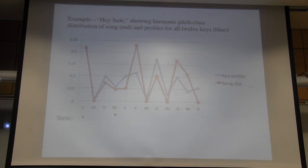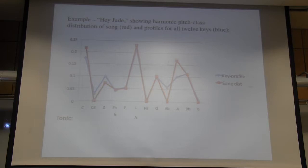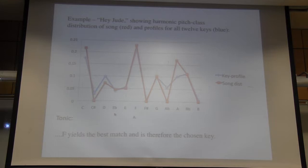Here's a quick example of how this works. Using the harmonic pitch class distribution for Hey Jude, we rotate the key profile through all 12 keys — C, C-sharp, D, E-flat, E, F — pretty good fit — F-sharp, G, A-flat, B-flat, B. The best fit is F, which is therefore the chosen key, and that is in fact the correct key.